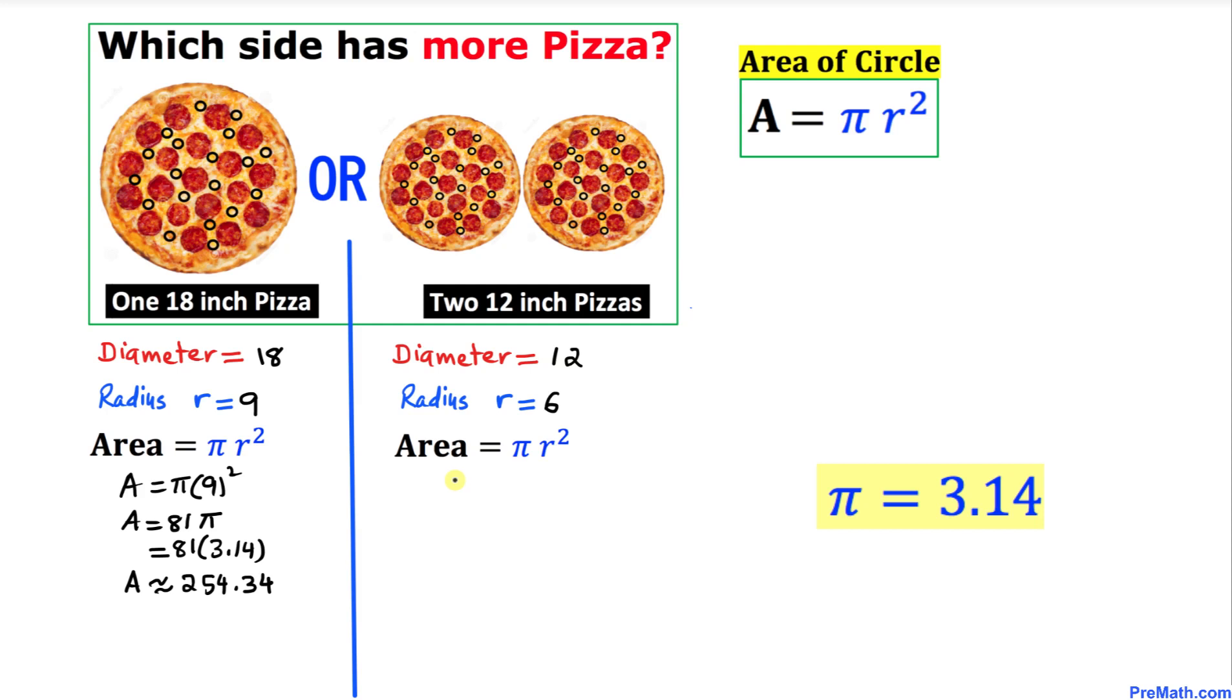Area is π times r². In our case, r is 6, so 6² equals 36. The area turns out to be 36π. Since we have two pizzas, we're going to multiply by 2.